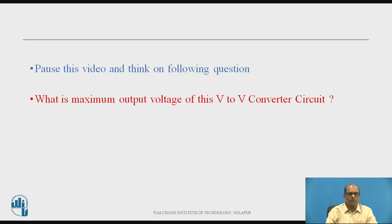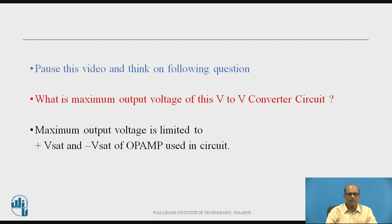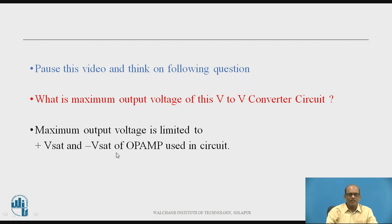Pause this video and think on the following question: what is the maximum output voltage of this V-to-V converter circuit? The maximum output voltage of any operational amplifier circuit is limited by plus V-sat and minus V-sat of the op-amp used in the circuit. In this circuit, 741 is used and plus V-sat and minus V-sat depend on the supply voltage V-cc — it is approximately one volt less than V-cc.